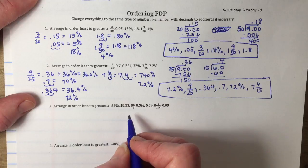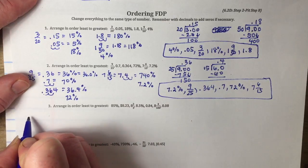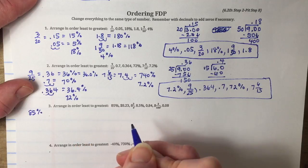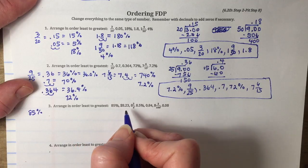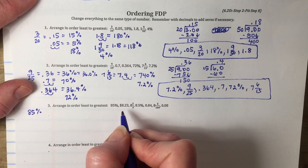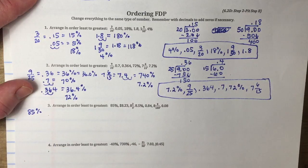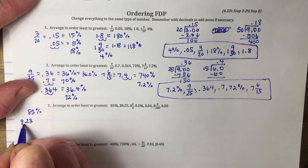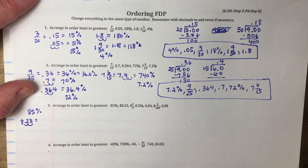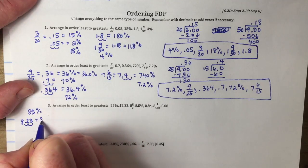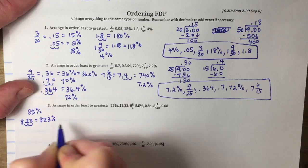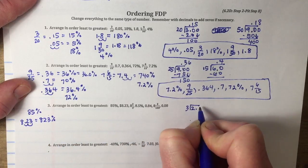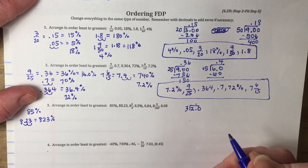Here's another example. 85% is already a percent, so I don't need to change anything. 8.23 — it's written like a dollar amount but it's just a decimal — so to change it to a percent I move two places, giving 823%. For 8 and 2/3, that's a fraction, so top in, bottom out: add a decimal, bring it up, add a zero.